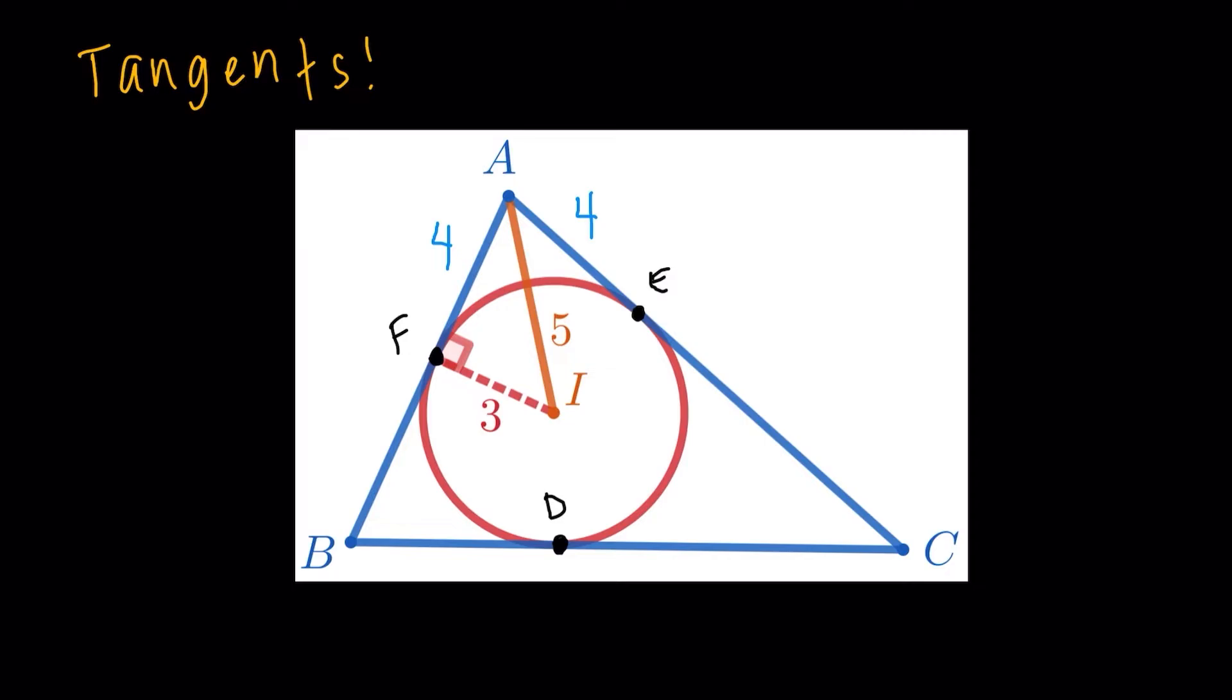Okay. With the same logic, BF is a tangent, and BD is the other tangent from B. So BF and BD should be of the same length. I'm going to highlight it in yellow.